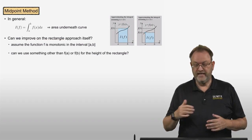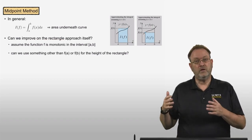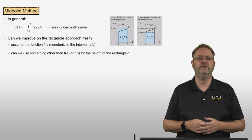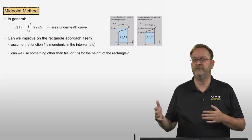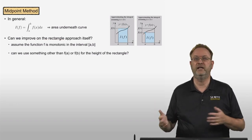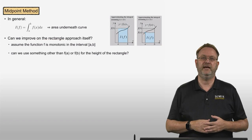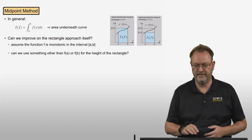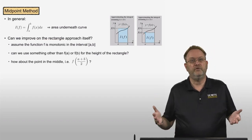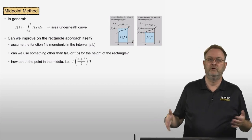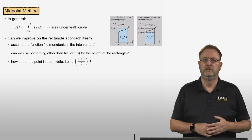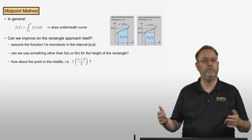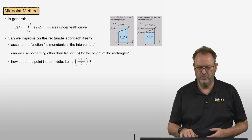We saw before that, depending on whether the function is monotonically increasing or decreasing, one of these rectangle techniques — f(a) or f(b) — will underpredict the area underneath the curve and the other will overpredict it. So how about using the function value at the midpoint of the integral, at a plus b over 2?